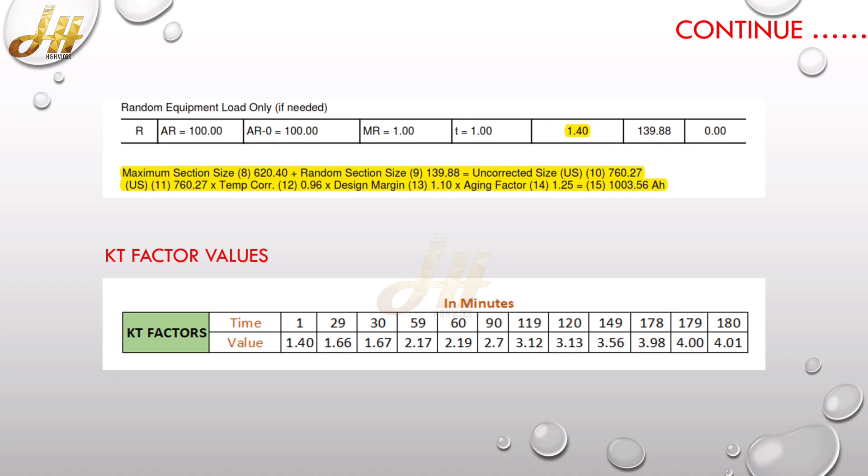So this is the uncorrected size. This uncorrected size is then calculated with temperature correction factor, design margin, and aging factor, so that we got the value of capacity as 1003.56 Ah. So the next higher capacity of the battery will be selected.